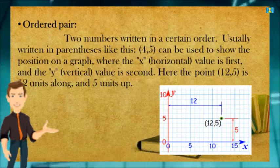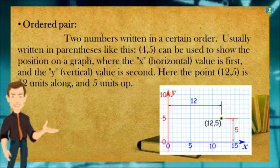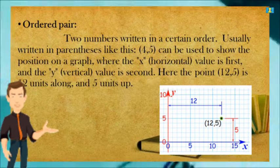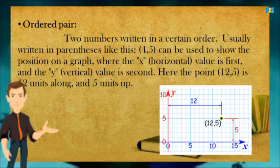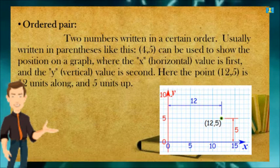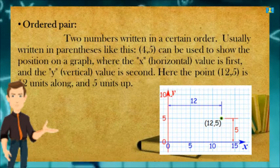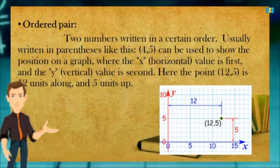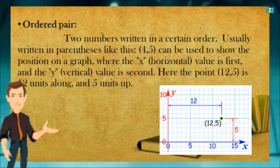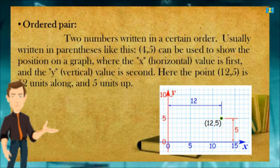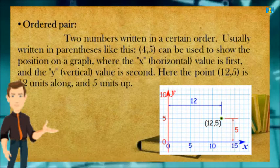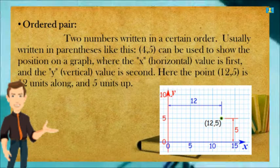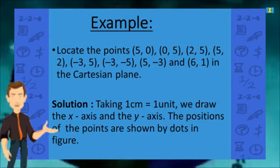An ordered pair can be used to show the position on a graph, where X denotes the horizontal value and comes first, and Y denotes the vertical value and comes second. For example, the point (12, 5) is 12 units along and 5 units up, as shown in the figure.